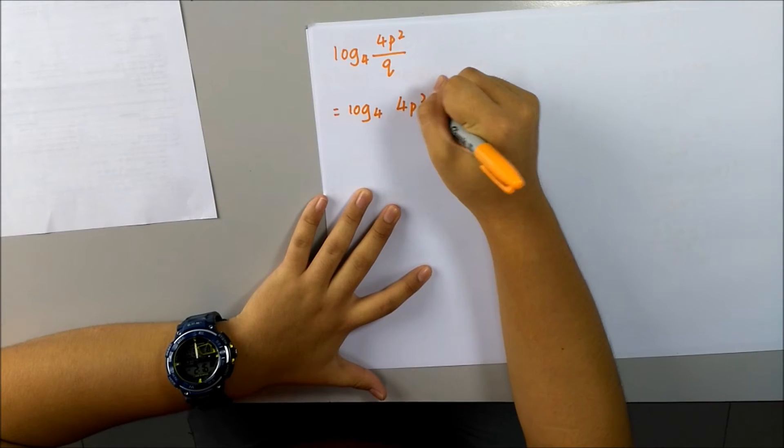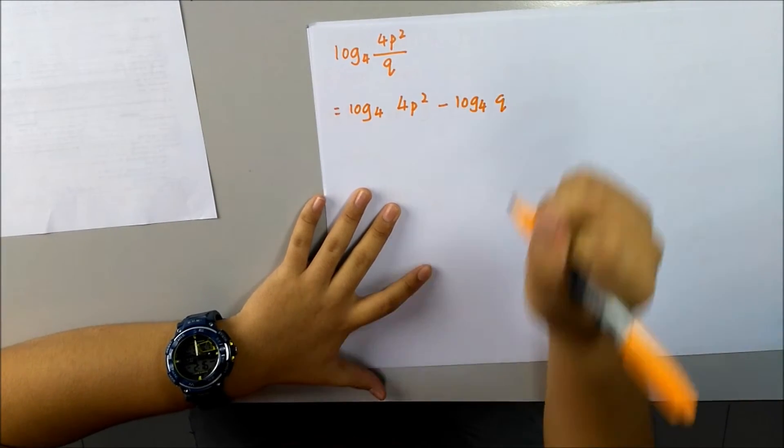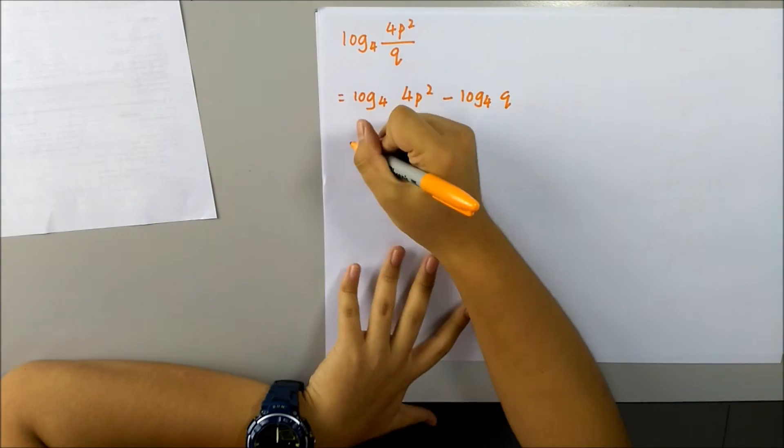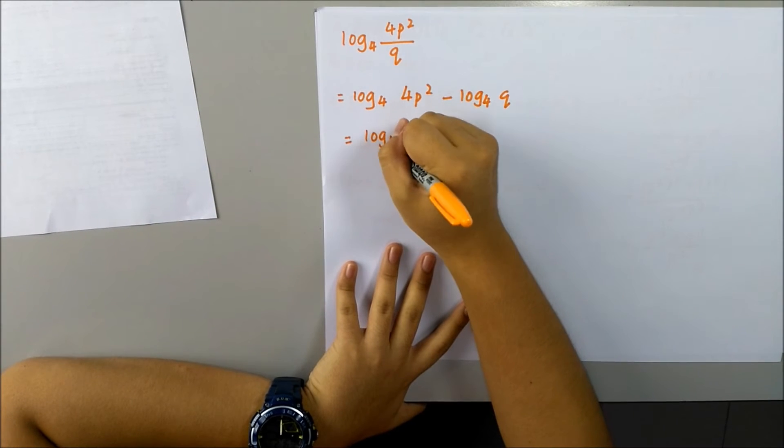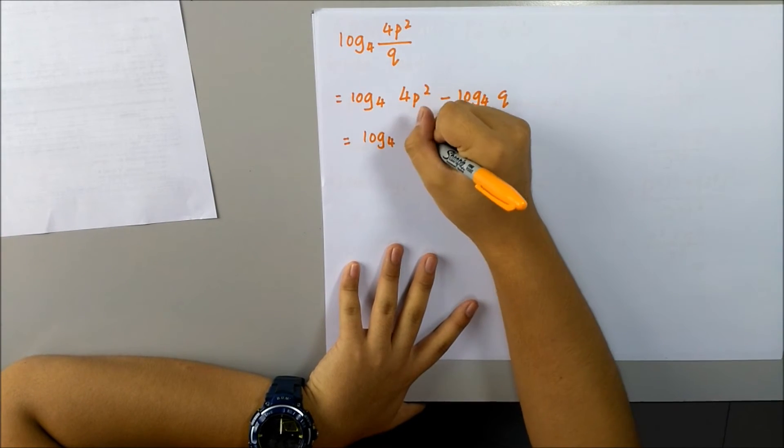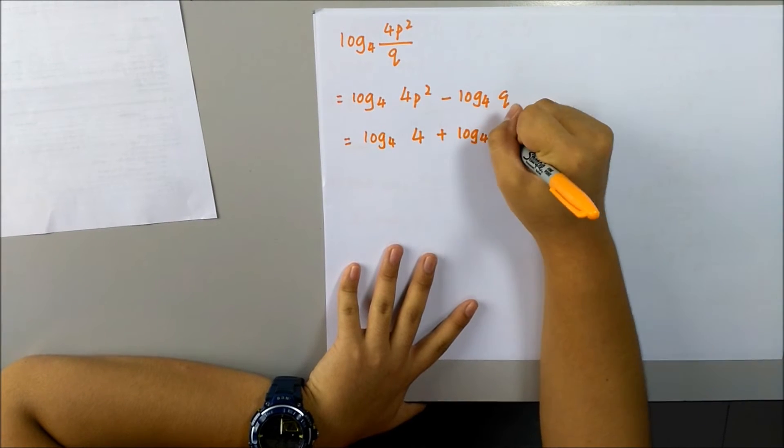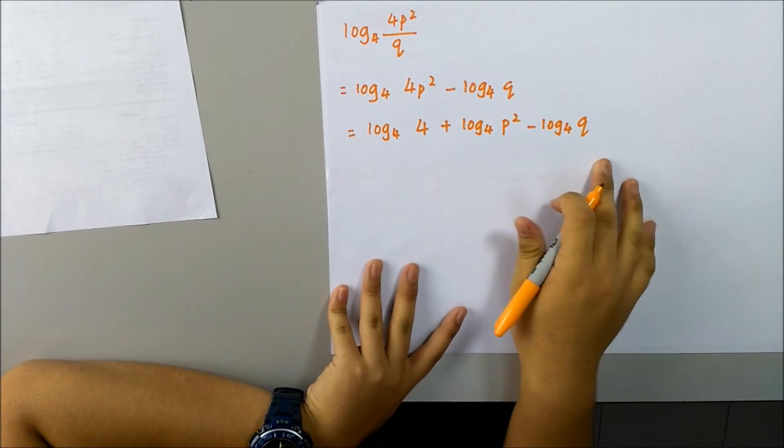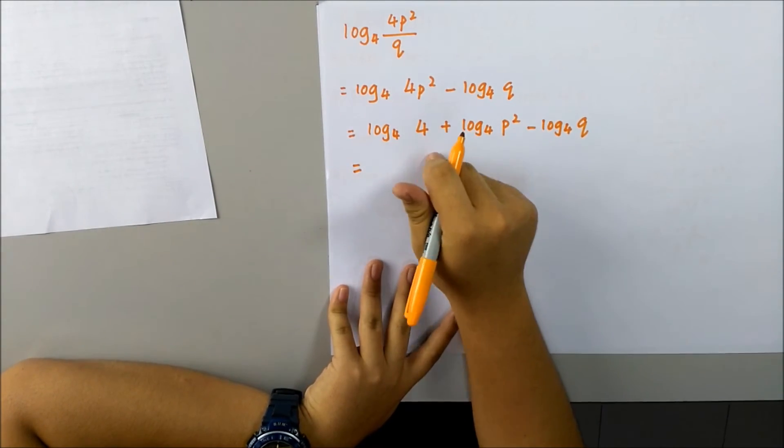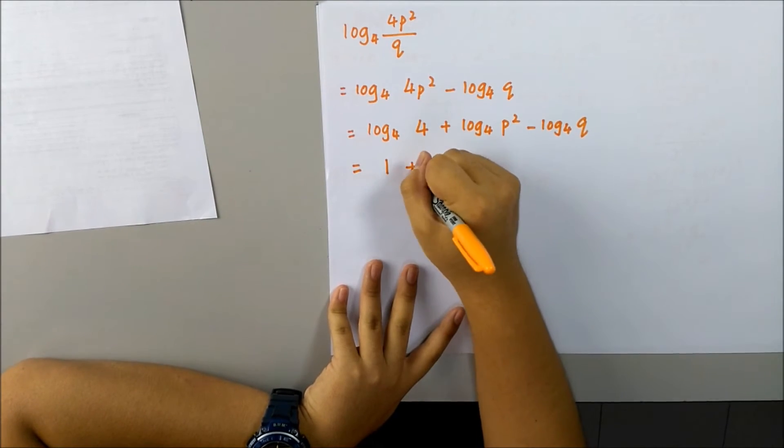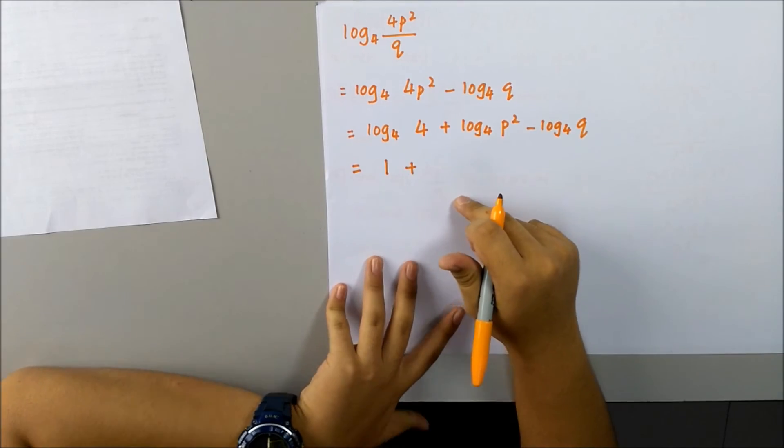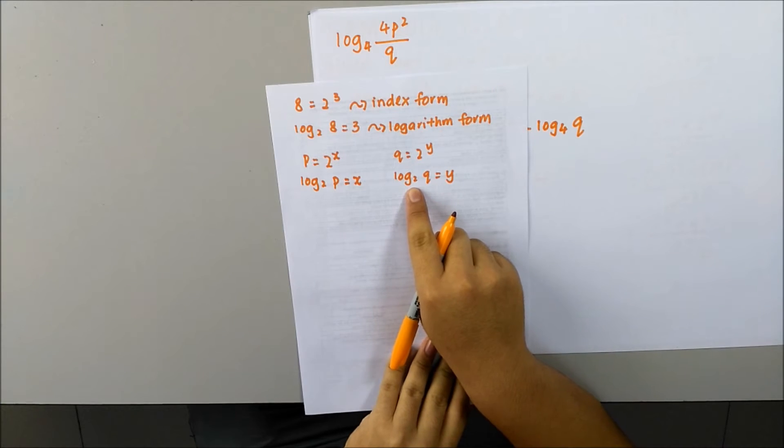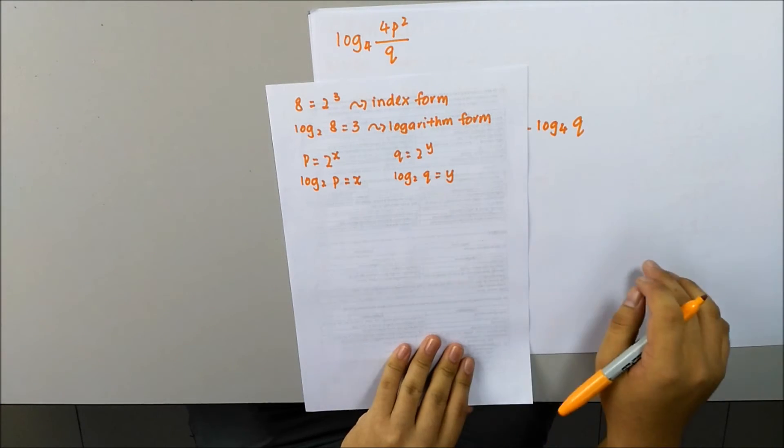Log 4 of 4p squared minus log 4 of q. Now 4p squared is in the relationship of multiplication, so we got to split them. So log 4 of 4 plus log 4 of p squared minus log 4 of q. In this, we got to know that log 4 of 4 is equal to 1. So log 4 of p squared, we got to change it to the base 2 in order to get x to sub it in.